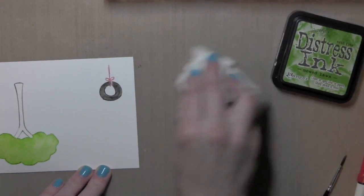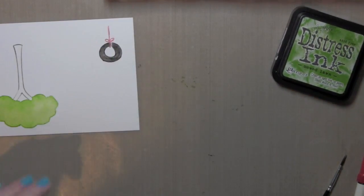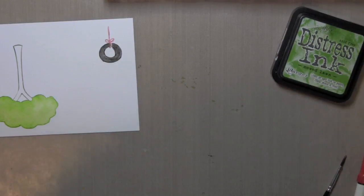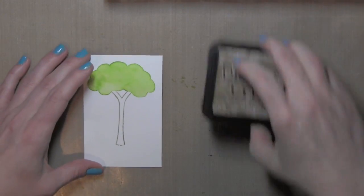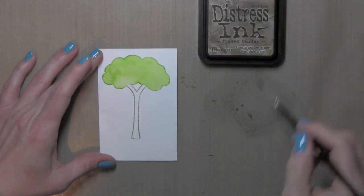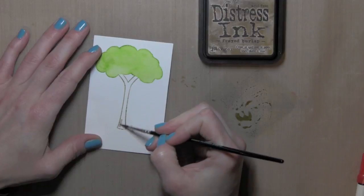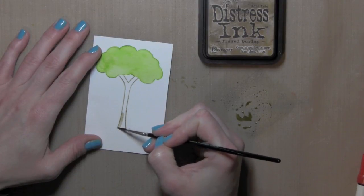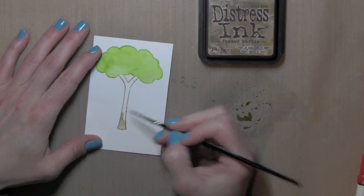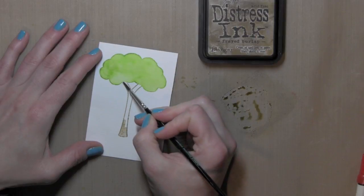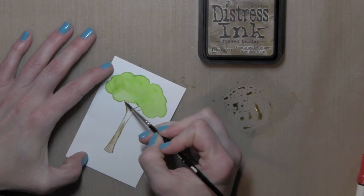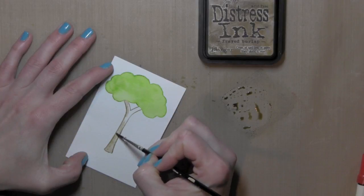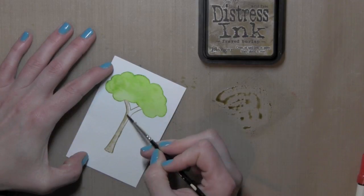So once I've used all of that that I need, I'm going to clean that up and move it out of the way and I'm working in sections so that they dry really well. I'm going to take that frayed burlap ink pad, because I've let my tree trunk pretty much dry, I'm going to need more color than what I can pull from that outside stamped line, so I just pressed it onto my craft mat, added a little bit of water, and I'm painting in the tree trunk.